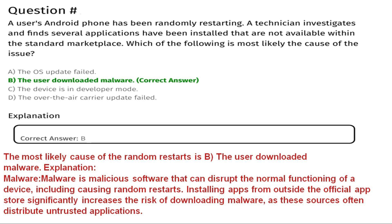Option C is the device is in developer mode, Option D is the over-the-air carrier update failed. The correct answer is Option B, the user downloaded malware. Malware is malicious software that can disturb the normal functioning of a device, including causing random restarts. Installing apps from outside the official app store significantly increases the risk of downloading malware, as those sources often distribute untested applications.